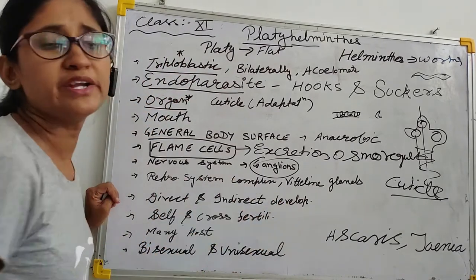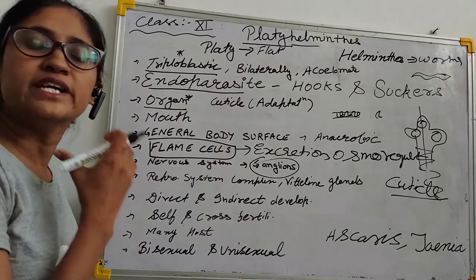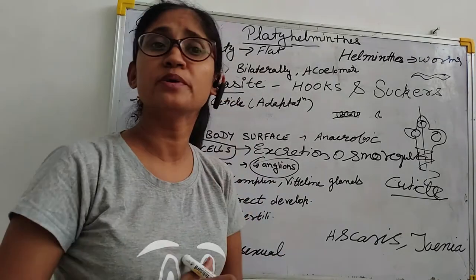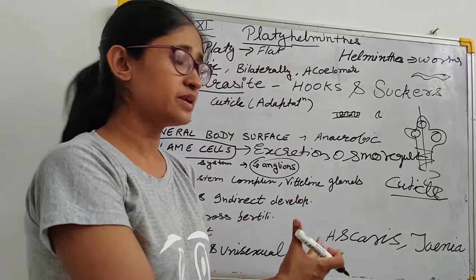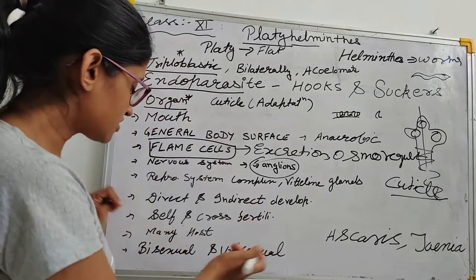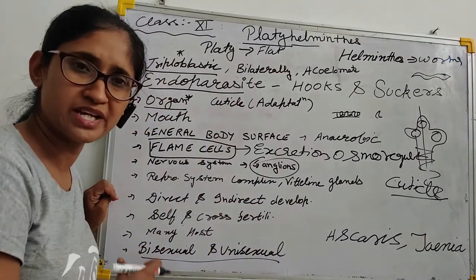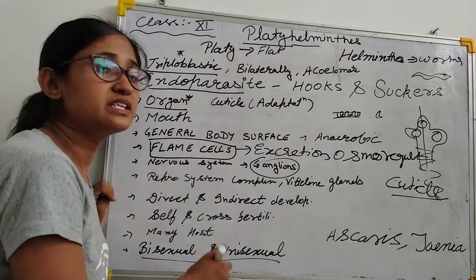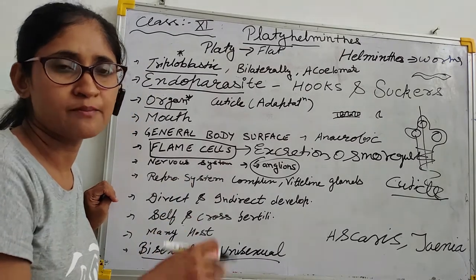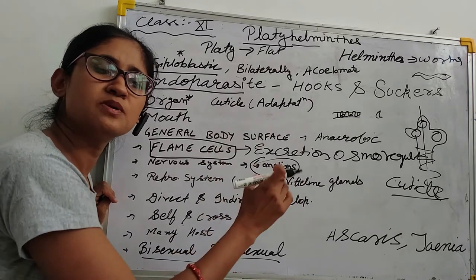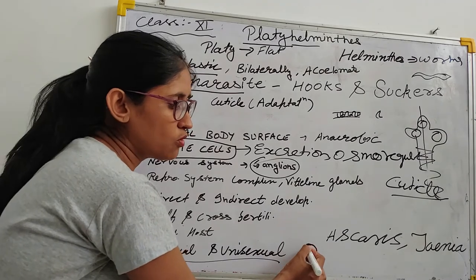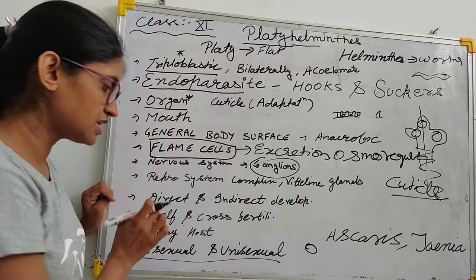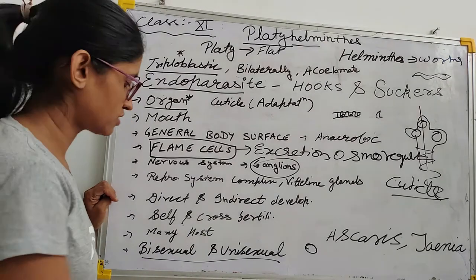Development can be of a direct type or indirect development. These animals can be unisexual or bisexual. Fertilization can be cross-fertilization or self-fertilization.